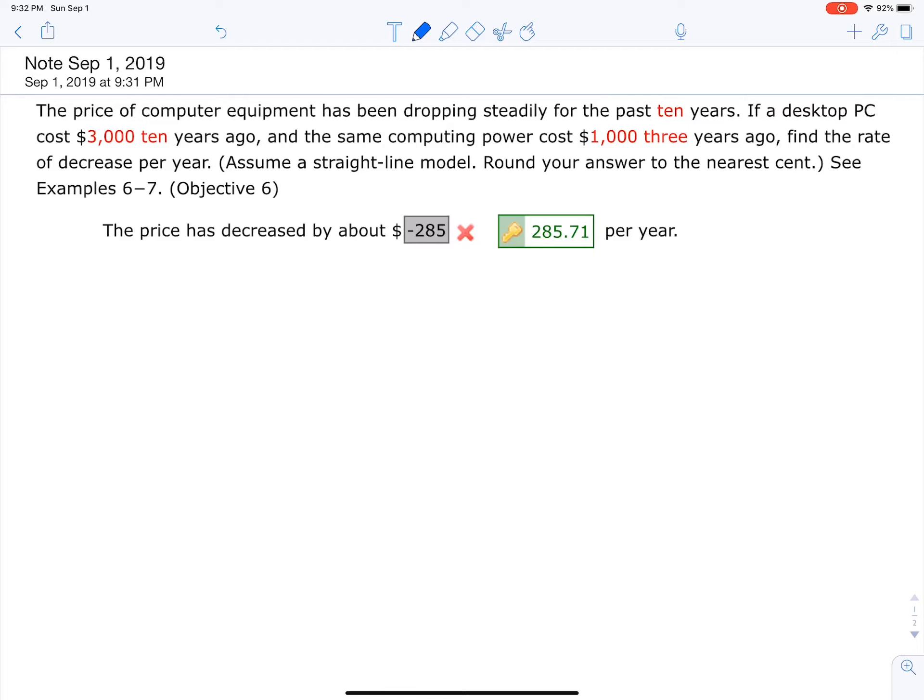So we can say that we have year as the independent variable and then cost as the dependent variable. Let's create our ordered pairs. Let's see, $3,000 ten years ago and then $1,000 three years ago.